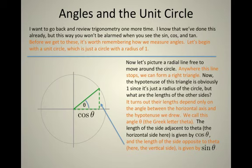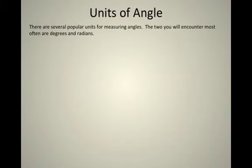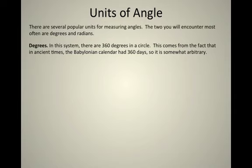The length of the height, this side opposite to theta, is called sine of theta. So there are different units of angles, for this angle theta there are degrees and there are radians. There are others as well, but these are the most popular. Degrees are kind of an arbitrary unit system actually. It's kind of like the British system, but in this case it's the Babylonian system.